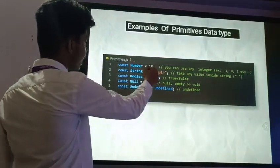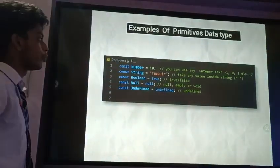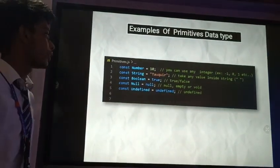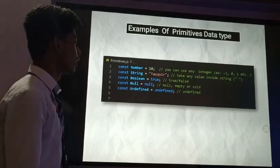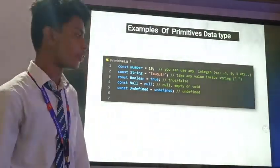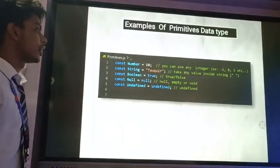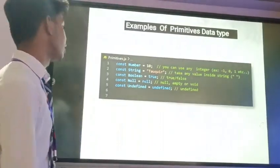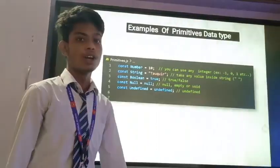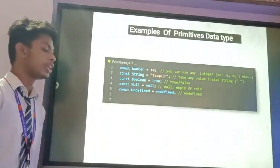And in string, you have to use double quotation to represent a string. In boolean, you have to use true or false. In null, null means empty or void. And in undefined, there is no value or the value you never defined.